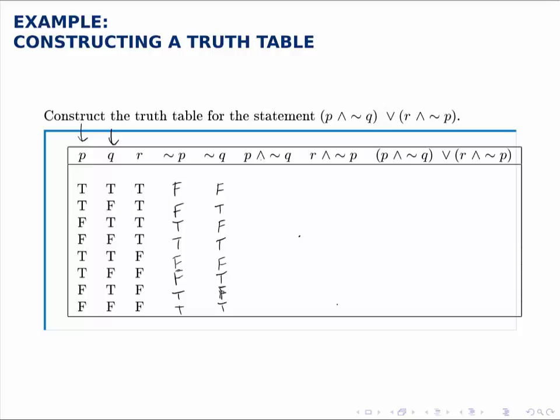Now for P and not Q, I'm going to look at the P and the not Q columns and combine them with the rule for and. Remember the rule for and is that it's only true if both of the initial statements are true. In the first row, it's false because not Q is false. In the second row, it's true because both P and not Q are true.